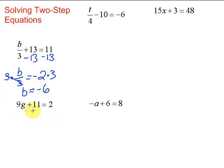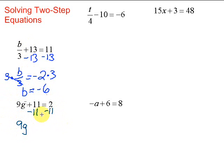We have 9g plus 11 equals 2. In this equation we have the plus 11 to get rid of first, so we're going to subtract 11 — do the opposite. Remember, if we do it on one side we have to do it on the other, so we subtract 11 here. Then we bring down what we have left: 9g. The plus 11 and minus 11 cancel out, and 2 minus 11 is negative 9.